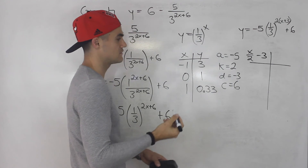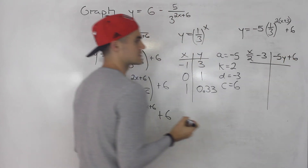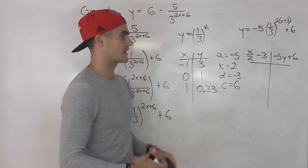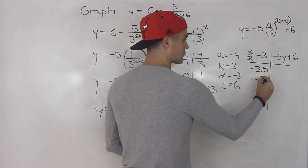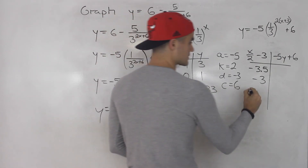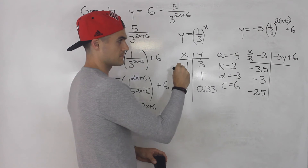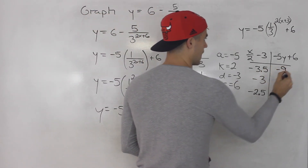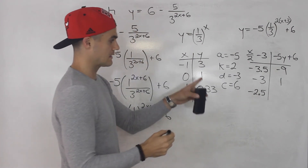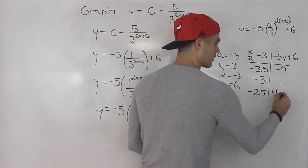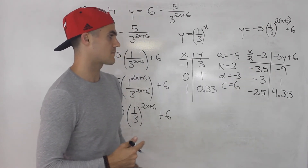The transformation formulas: all x-values are divided by k (which is 2) then subtract 3 (adding d = −3); all y-values are multiplied by −5 and then 6 is added. Applying these: x = −1 → −0.5 − 3 = −3.5; x = 0 → −3; x = 1 → −2.5. For y: 3 × −5 + 6 = −9; 1 × −5 + 6 = 1; 0.33 × −5 + 6 ≈ 4.35.